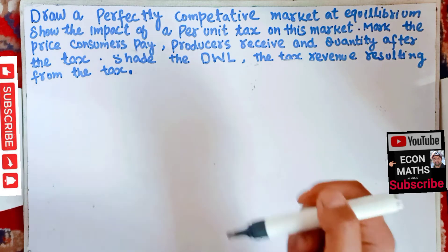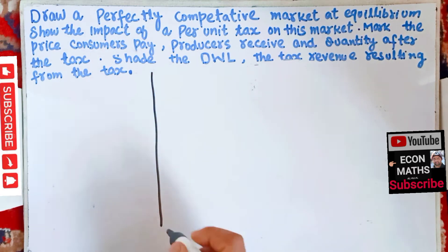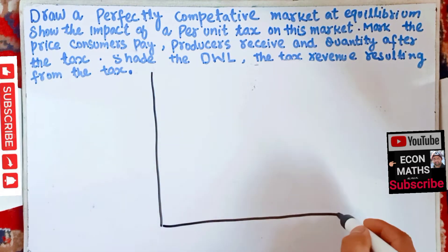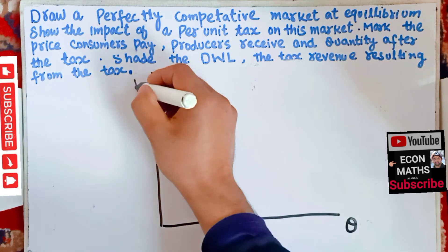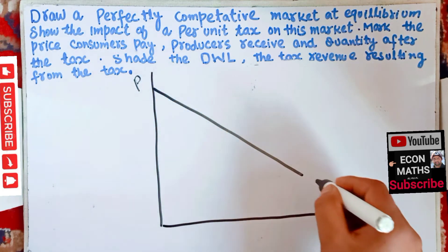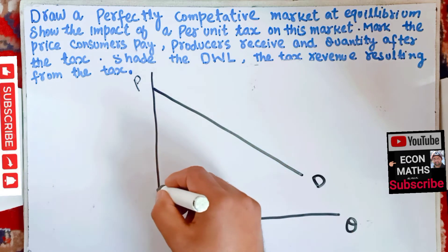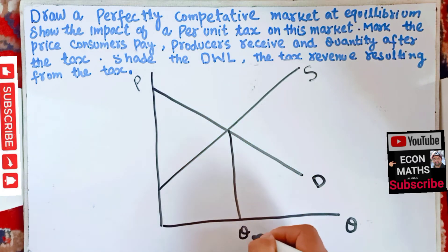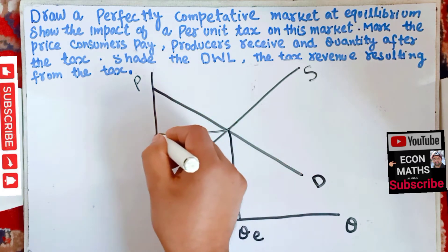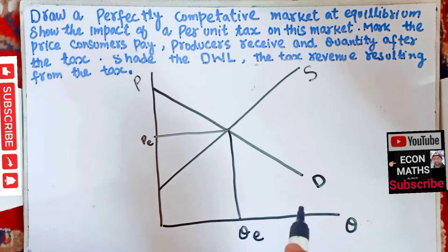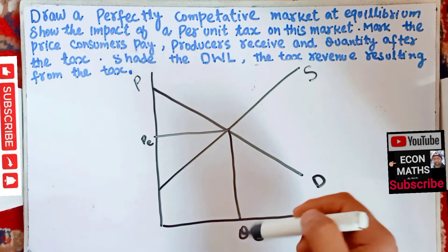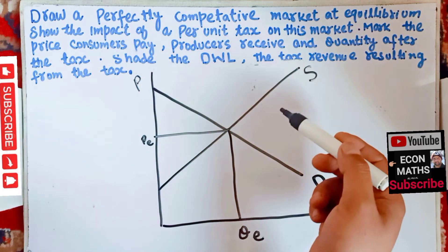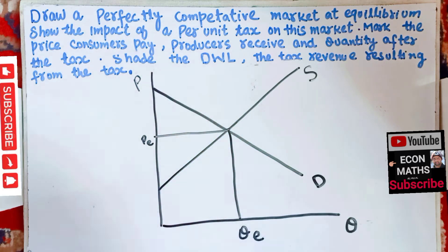First of all, we will start by drawing a properly labeled market at equilibrium. We draw the usual demand and supply curves. This is our Q quantity axis, this is our price axis. We mark the equilibrium quantity — that's QE — and equilibrium price, let us say this is PE. So this is the first step: we draw the usual demand and supply curves and their intersection gives us the equilibrium quantity and equilibrium price.